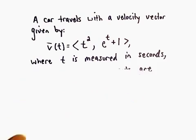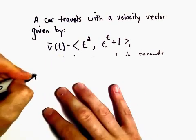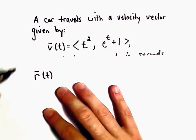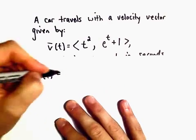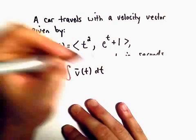Well, to do this, if we're given velocity, to get back to our position vector r(t), all we're going to have to do is we're going to integrate our velocity vector with respect to t.